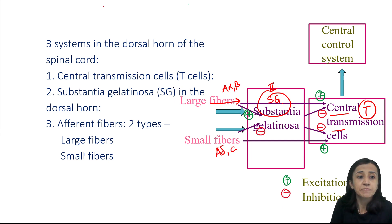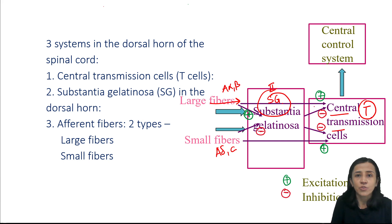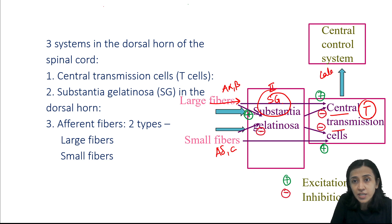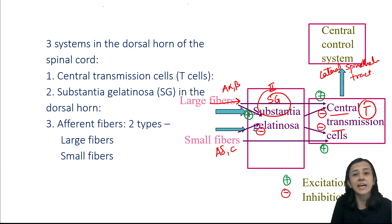Starting with central transmission cells: they are present in the dorsal horn of the spinal cord, and they activate the lateral spinothalamic tract, which is the ascending tract for pain sensation. The lateral spinothalamic tract is stimulated for the perception of pain and motor response to pain.